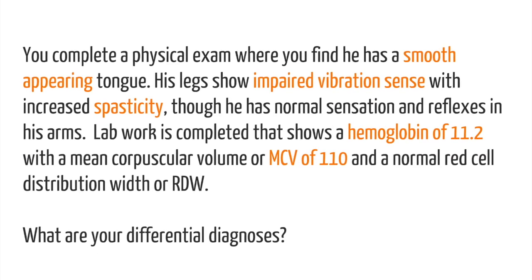You complete a physical exam where you find he has a smooth-appearing tongue. His legs show impaired vibration sense with increased spasticity, though he has normal sensation and reflexes in his arms. Lab work is completed that shows a hemoglobin of 11.2 with a mean corpuscular volume, or MCV, of 110 and a normal red cell distribution width, or RDW. What are your differential diagnoses?